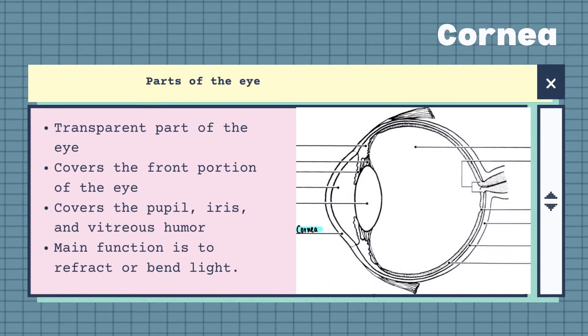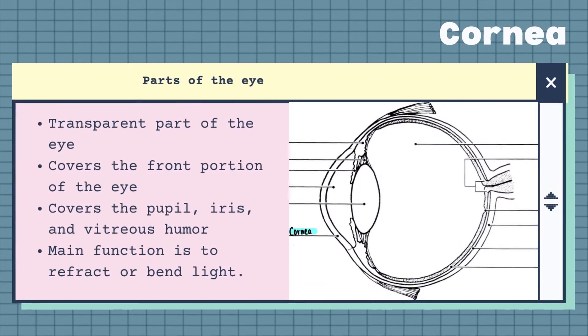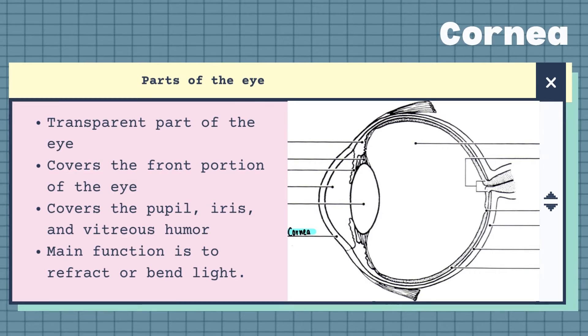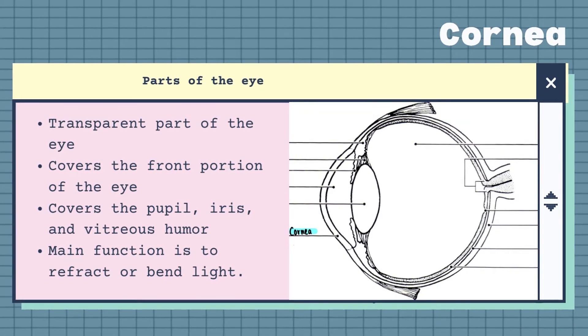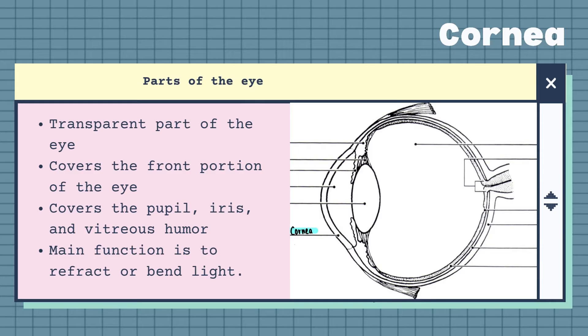The cornea is a transparent part of the eye that covers the front portion of the eye. It covers the pupil, iris and the vitreous humor. The cornea's main function is to refract or bend light.